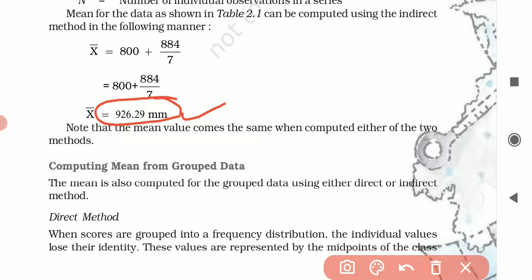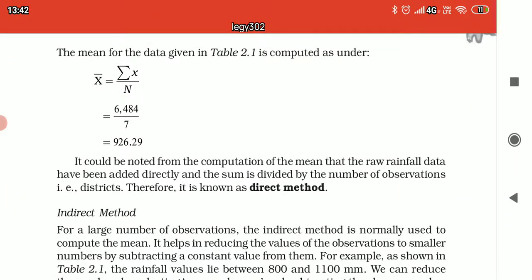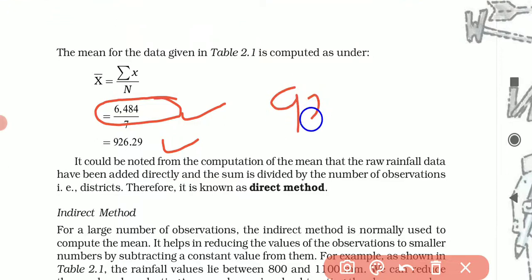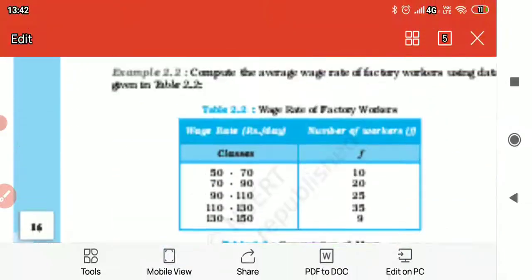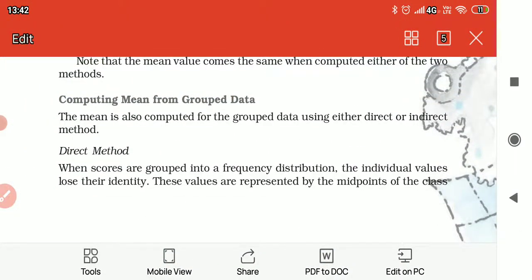Note that the mean value comes the same when computed by either of the two methods. We should remember whether you use direct method or indirect method, both values are the same. The mean value is the same: 926.29. This way you have used indirect method and direct method, both giving the same answer.